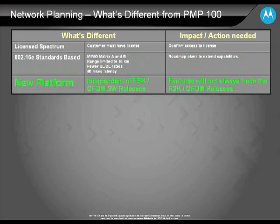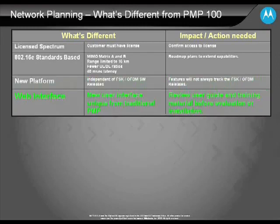It's important to note that this is a different platform from the traditional PMP products, so it will have a different software release roadmap and different software release features. When comparing a PMP product to the PMP320, you need to review the user guide documentation and release notes to understand exactly what features are available in each product. The web interfaces are also different between the two products. The PMP320 has a web-based GUI on both the access point and the subscriber module. You should review the user guide and training materials available at wirelessbroadbandsupport.com to understand the differences and learn more about the product.